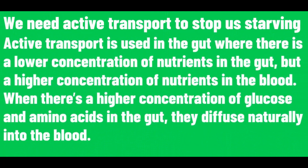We need active transport to stop us starving. Active transport is used in the gut when there is a lower concentration of nutrients in the gut but a higher concentration of nutrients in the blood. When there is a higher concentration of glucose and amino acids in the gut, they diffuse naturally into the blood.